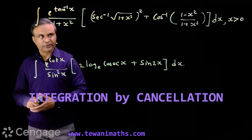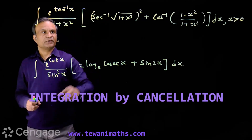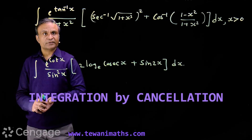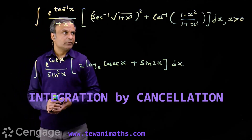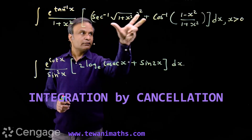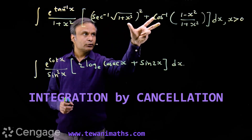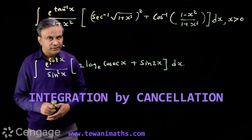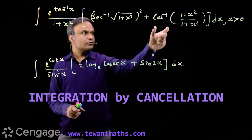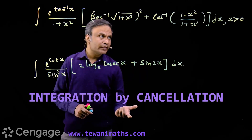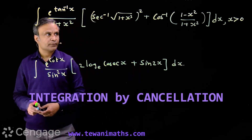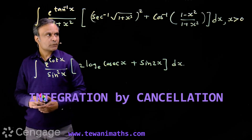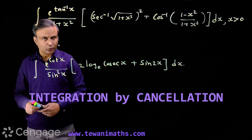We have two more questions. The first one: the integrand is e raised to tan-inverse x, over 1 plus x squared, multiplied by an expression inside brackets. Here we have two inverse trigonometric functions — the square of sec-inverse of root(1 plus x squared), plus cos-inverse of (1 minus x squared) over (1 plus x squared). We will be using some formulas of inverse trigonometric functions.